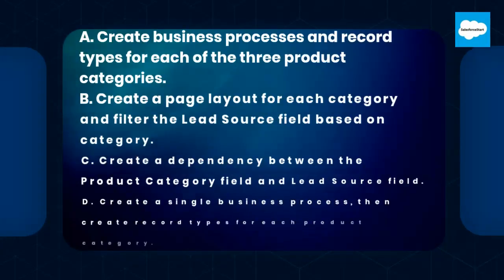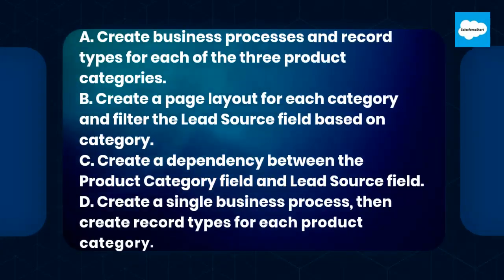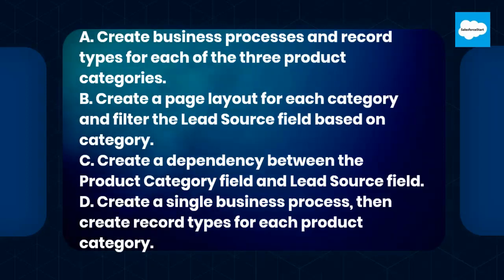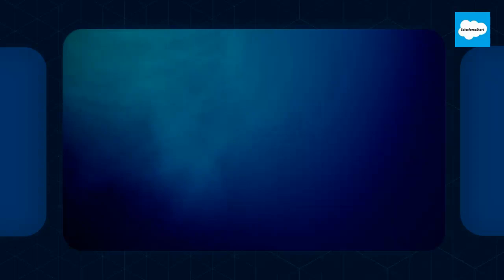How should the administrator configure Salesforce to meet this requirement? A. Create business processes and record types for each of the three product categories. B. Create a page layout for each category and filter the lead source field based on category. C. Create a dependency between the product category field and lead source field. D. Create a single business process, then create record types for each product category.